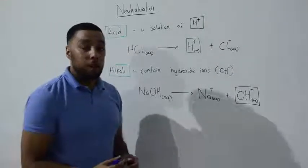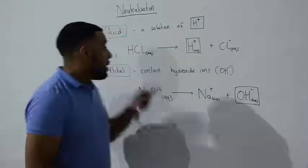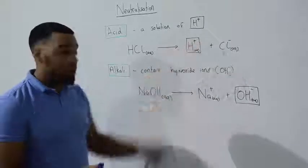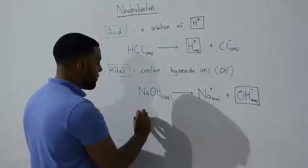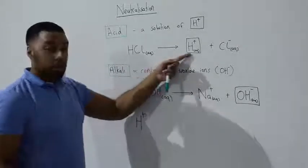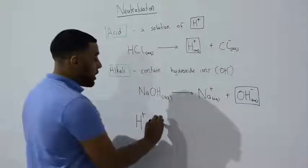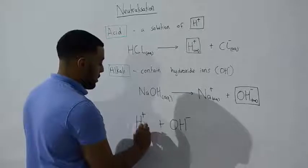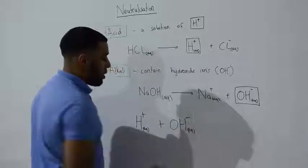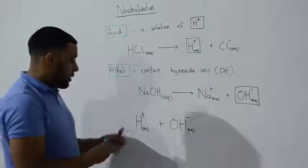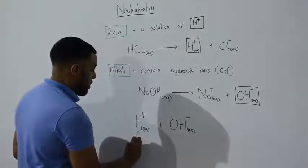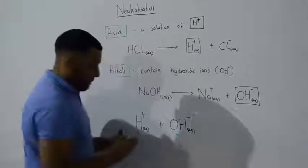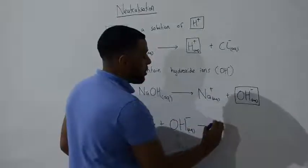In your exam, you may be asked for the ionic equation between an acid and an alkali. We can think of an acid as just being these hydrogen ions. And when we add an acid to an alkali, which we can think of just being hydroxide ions, when we add an acid to an alkali, we produce water.